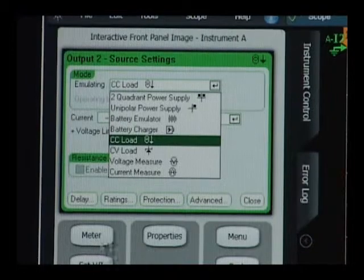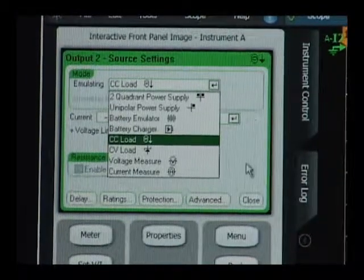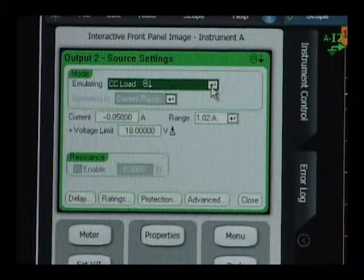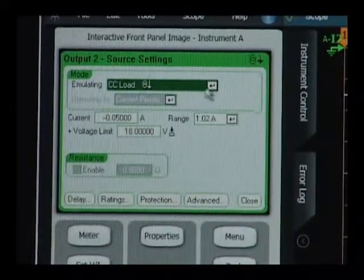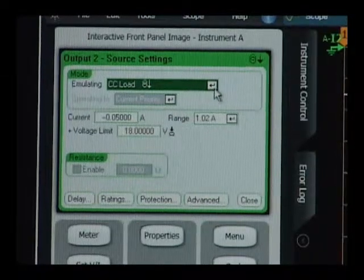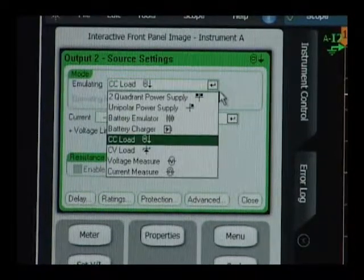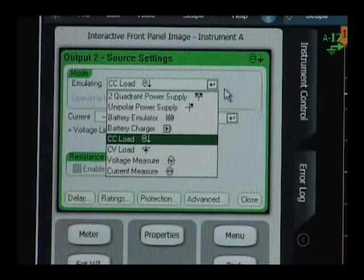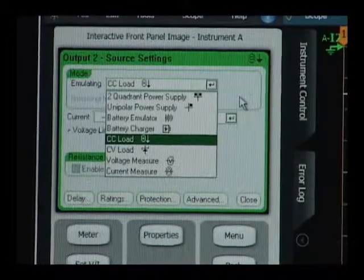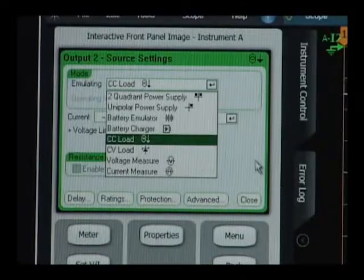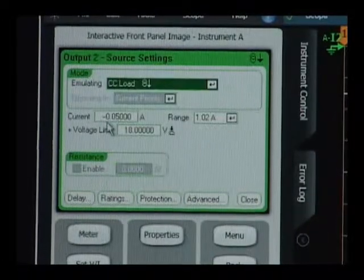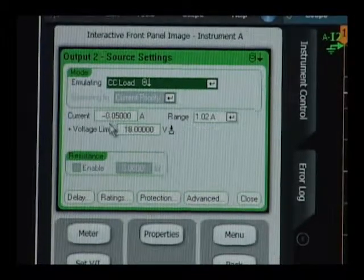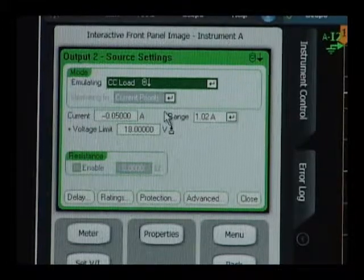Let me set up output 2 here. We need to set up output 2 as an electronic load. As you can see we've set it up for CC load operation. We have a pull down menu here that allows us to quickly set up outputs for any kind of configuration we need, whether it's a source or a load. We have set it up for minus 50 milliamps of DC bias drain current. It's negative because it's operating as a load, not a source.